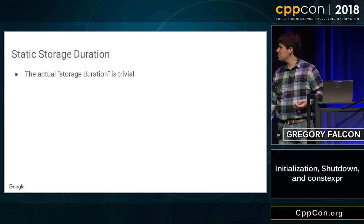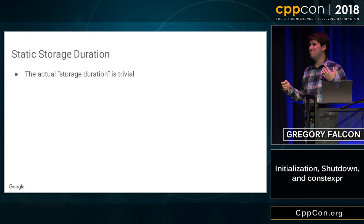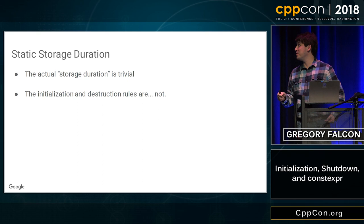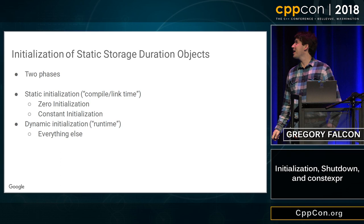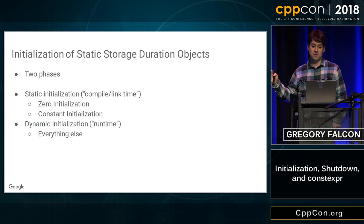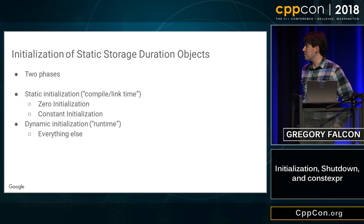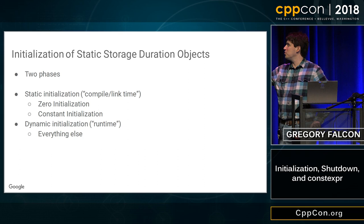C++ comes back at you with: the initialization and destruction rules for objects with static storage duration are decidedly not trivial. The initialization of static storage duration objects happens in two phases. All static storage duration objects undergo some form of static initialization — either zero initialization or constant initialization. And then some can undergo dynamic initialization where stuff happens at runtime. The static initialization is all of the initialization that can be done at compile time or link time. Dynamic initialization is stuff actually done at runtime, where machine code is executing and populating the memory for your object.